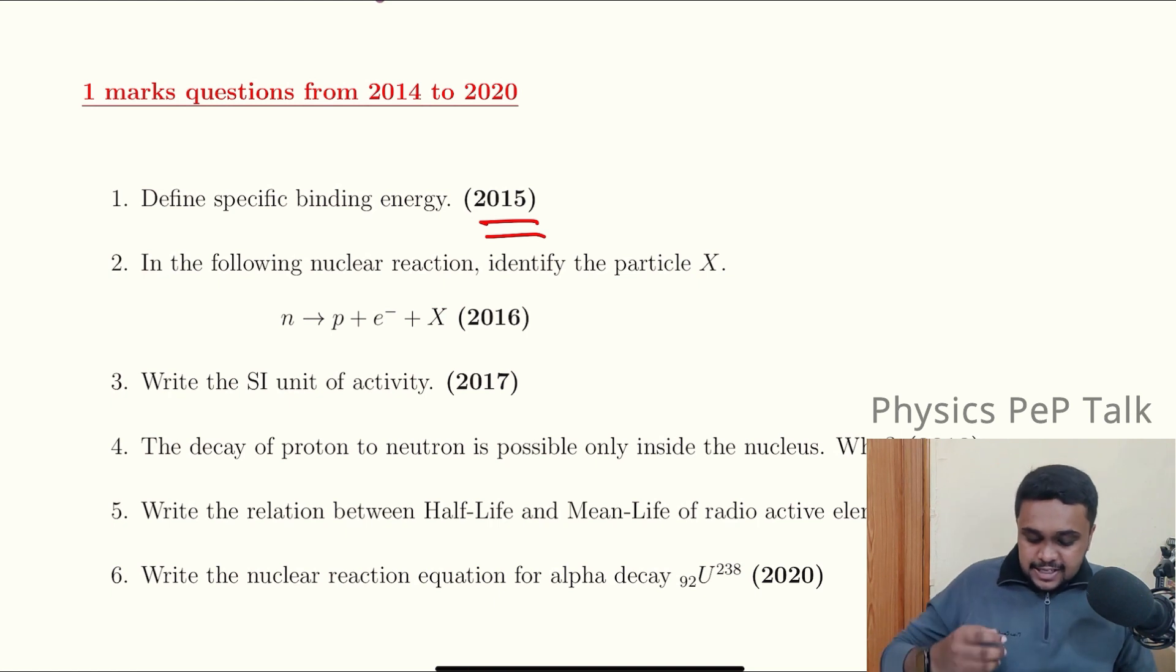In 2015, define specific binding energy. It is defined as the ratio of binding energy of the nucleus to the total number of nucleons. This is called specific binding energy.